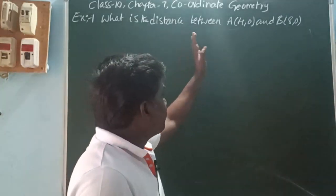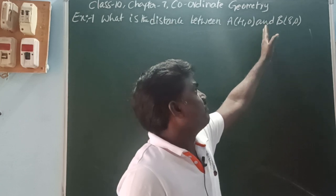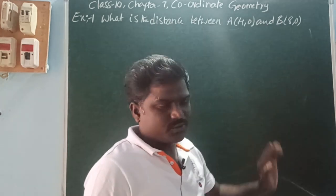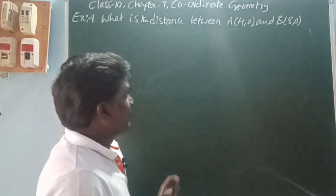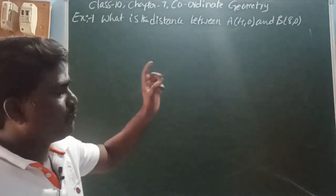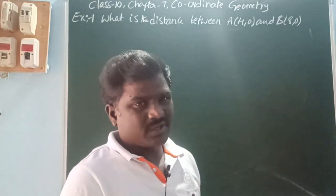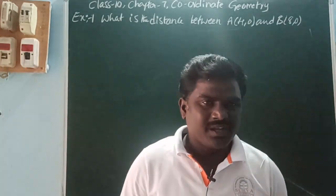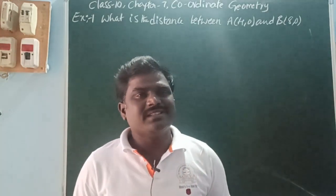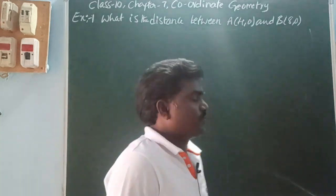Here, what is the distance between A(4, 0) and B(8, 0)? We know that in these two points the y-coordinate is the same. So the distance between the two points is modulus of x2 minus x1.